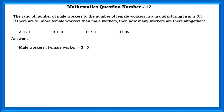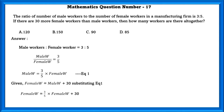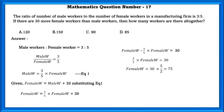Male workers to female workers is equal to 3 to 5, so male workers divided by female workers equals 3 by 5. Therefore, male workers = (3/5) × female workers — that is equation 1. Given female workers = male workers + 30. Substituting equation 1, we can find the value of female workers: that is 75.